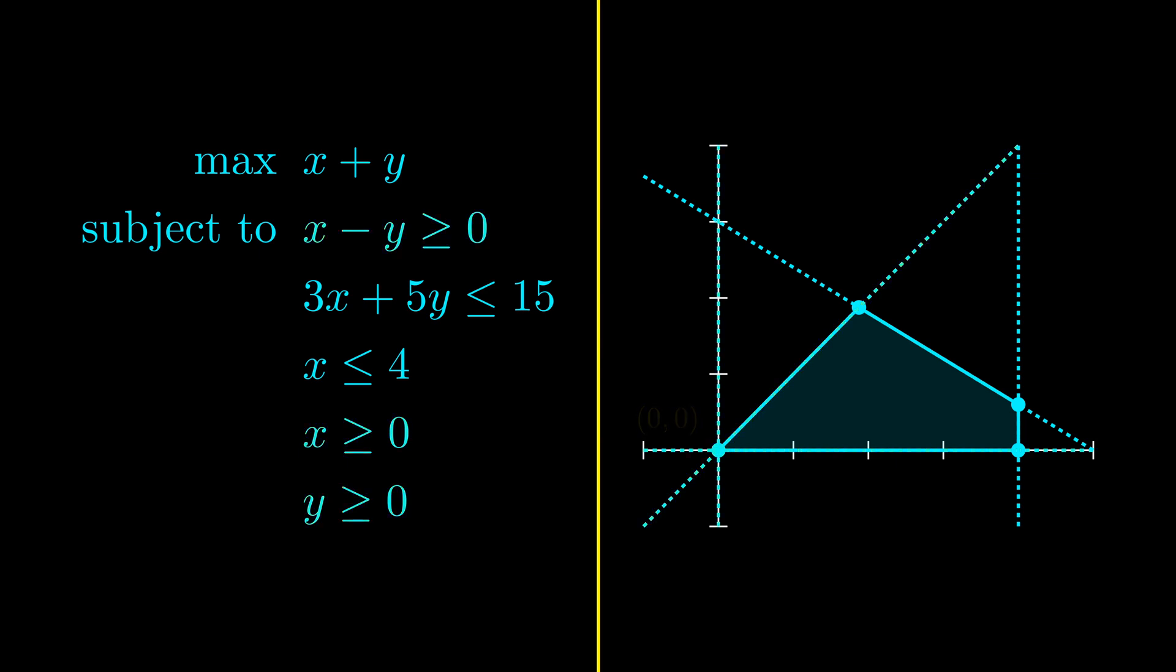Finally, just finding the point where two constraints are tight does not necessarily give a vertex. As an example, these two highlighted constraints are tight at the point 0,3. But 0,3 is not feasible because it violates the first constraint, shown in purple. So feasibility is also required.